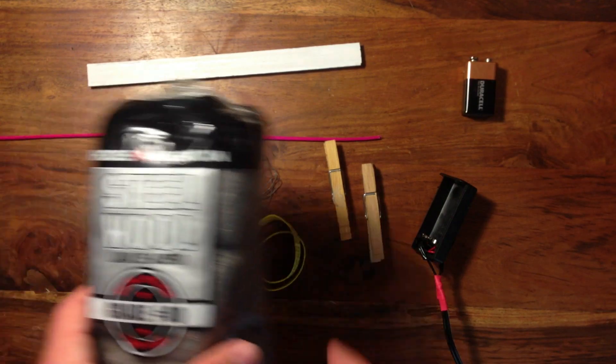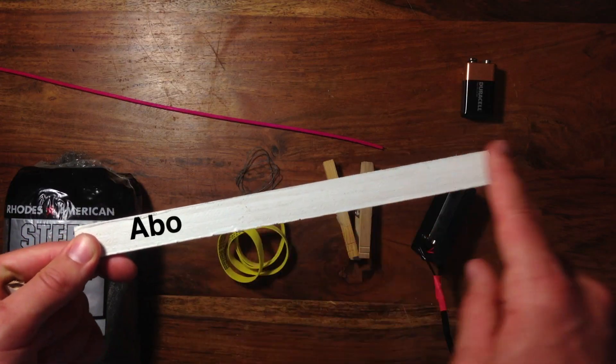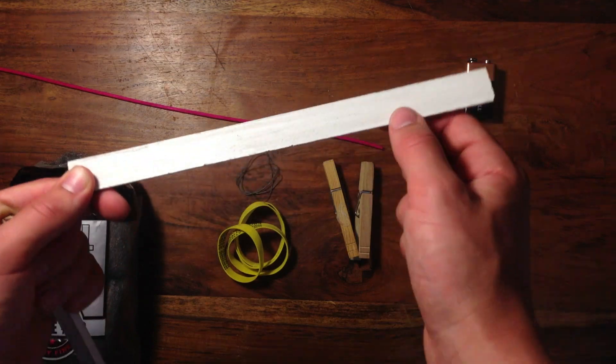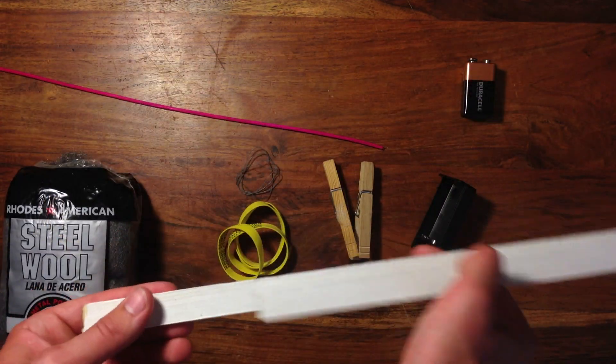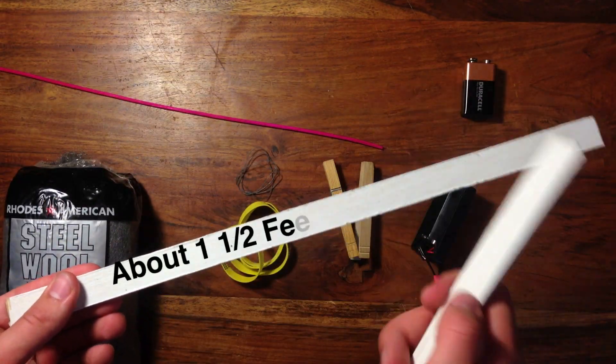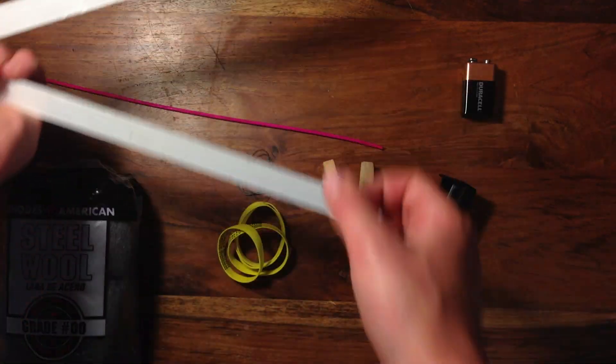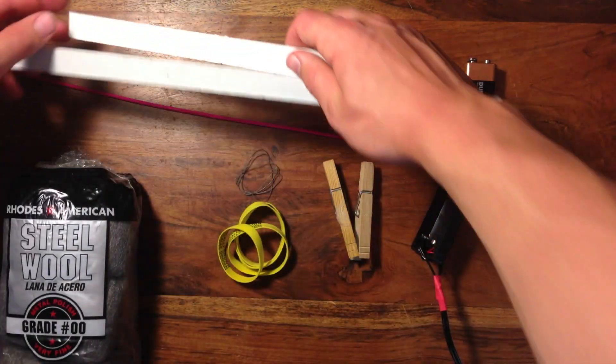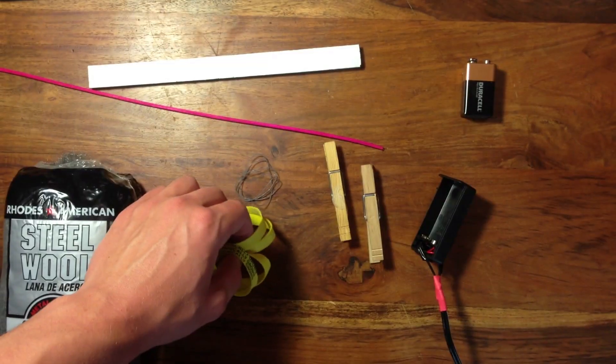For materials, you'll need some steel wool, three pieces of thin wood, one at about a foot, the other at about a foot and a half, and last one at about three inches. I'm using some trim, but any thin piece of wood, such as a few paint stirrers glued together, will also work.